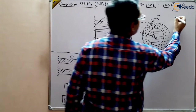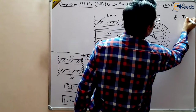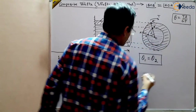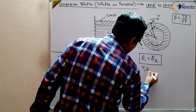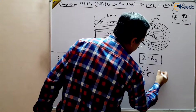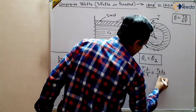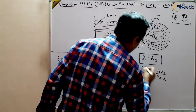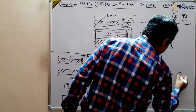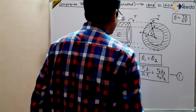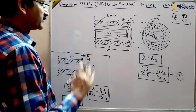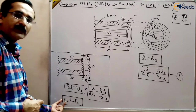We can write that theta 1 equals theta 2, since both have twisted through the same angle. Using the formula theta = T·L / (G·J) — a very important formula — we get: T1·L1 / (G1·J1) = T2·L2 / (G2·J2), where L may be the same or different. This is the first equation for solving all the unknowns of this composite system.